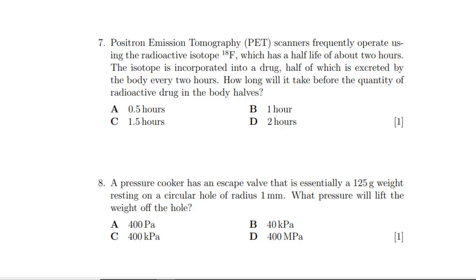Question seven: PET scanners frequently operate using this radioactive isotope fluorine-18 with a half-life of two hours. The isotope is incorporated into a drug, half of which is excreted by the body every two hours. How long will it take before the quantity of radioactive drug in the body halves? Our decay constant is going to be log 2 over the half-life, so that is log 2 over 2, keeping it in hours, which equals log of the square root of 2.